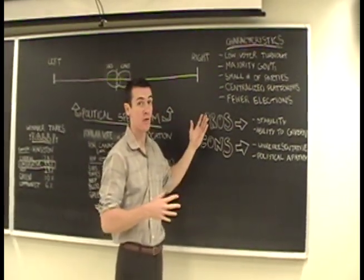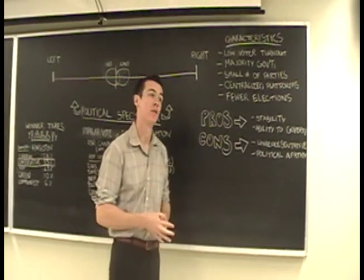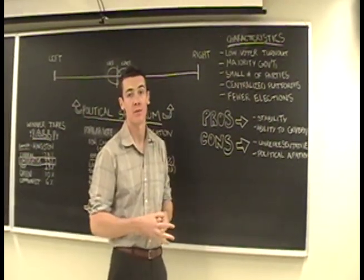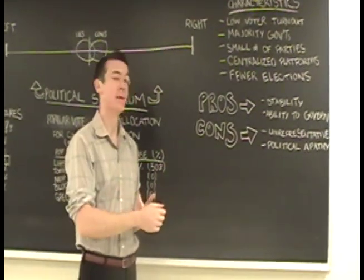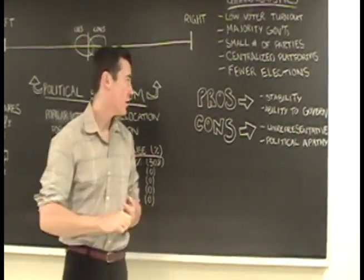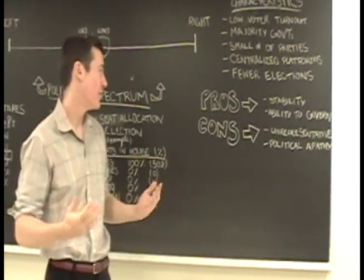Since you are having more majority governments or strong governments, there's less likelihood that parliament will be dissolved. So, the pros of the first-past-the-post system? Stability in government and ability to govern. The cons? It's not exactly representative. And there's a lot of political gravity.